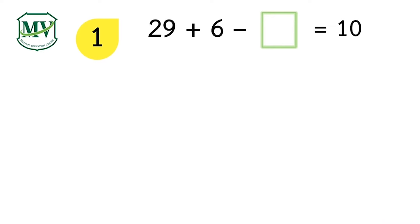29 plus 6 minus box equals 10. First, let's review the rule in simplifying two or more operations. That's right! We have to simplify from left to right. Let's try to answer.